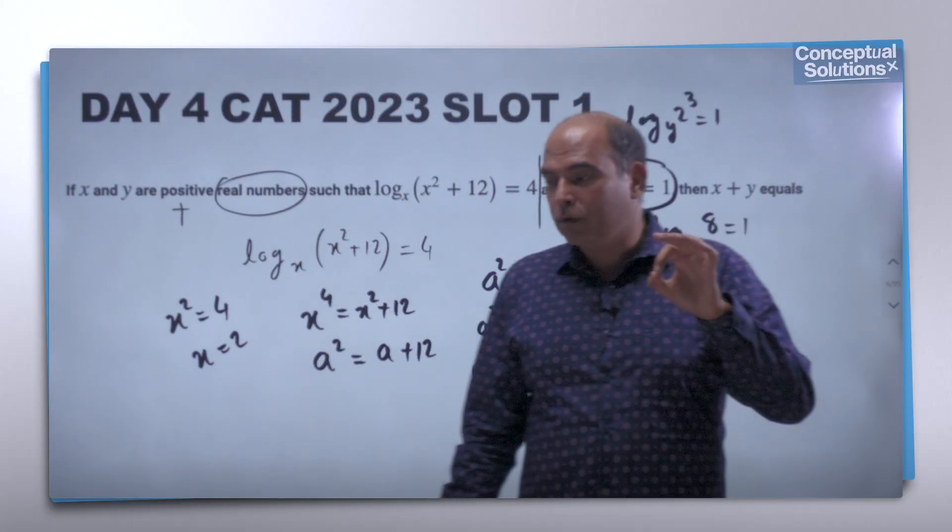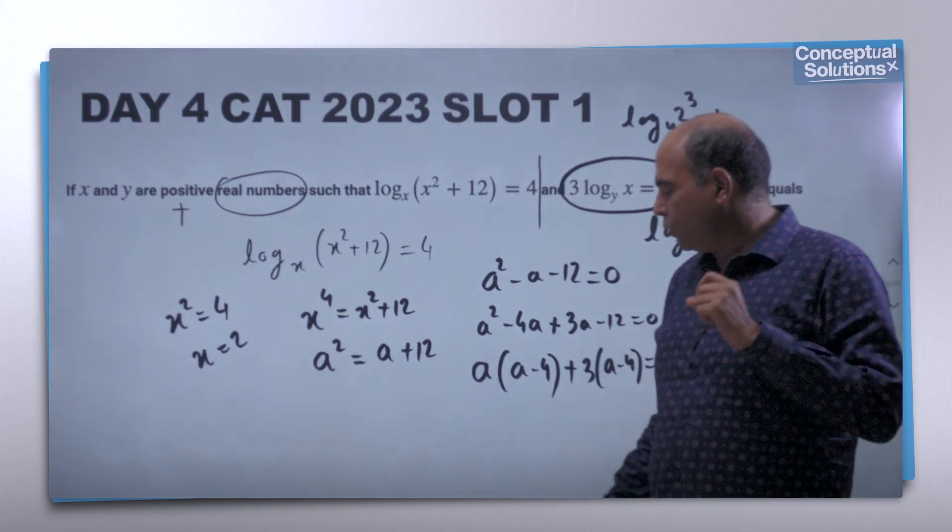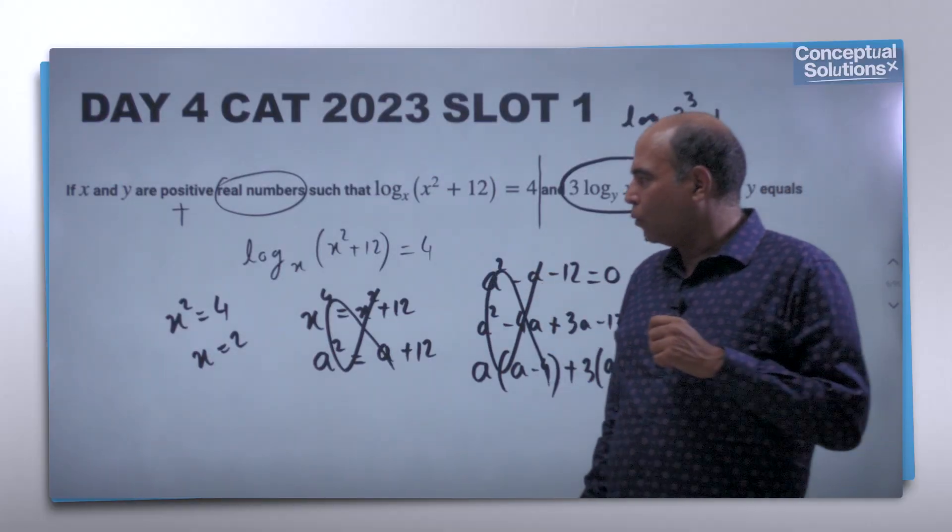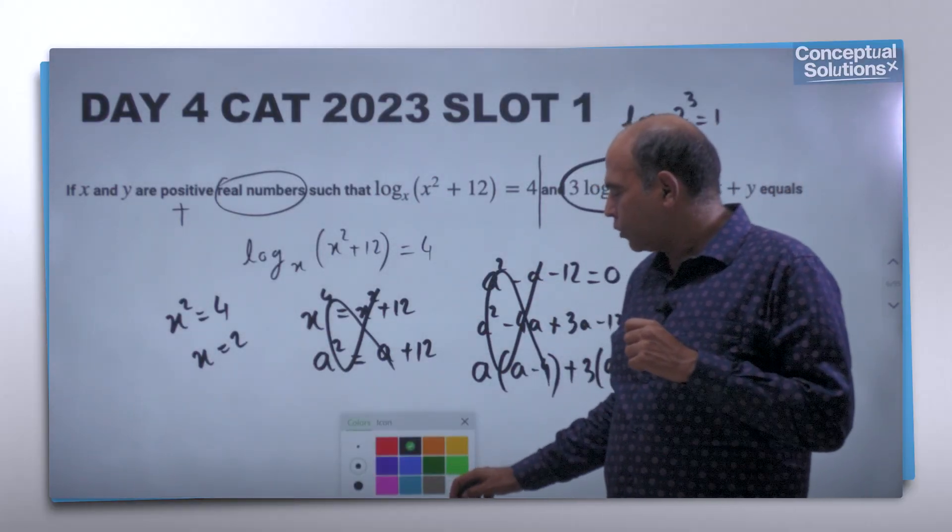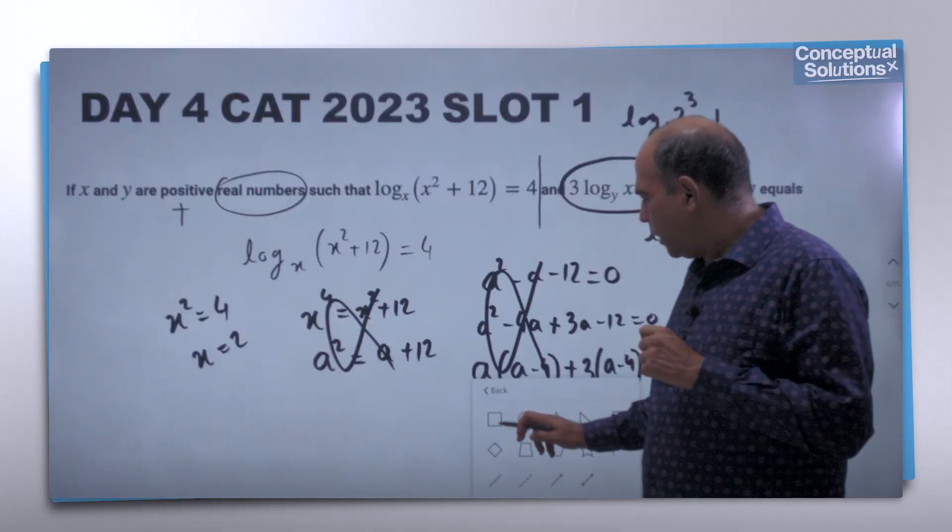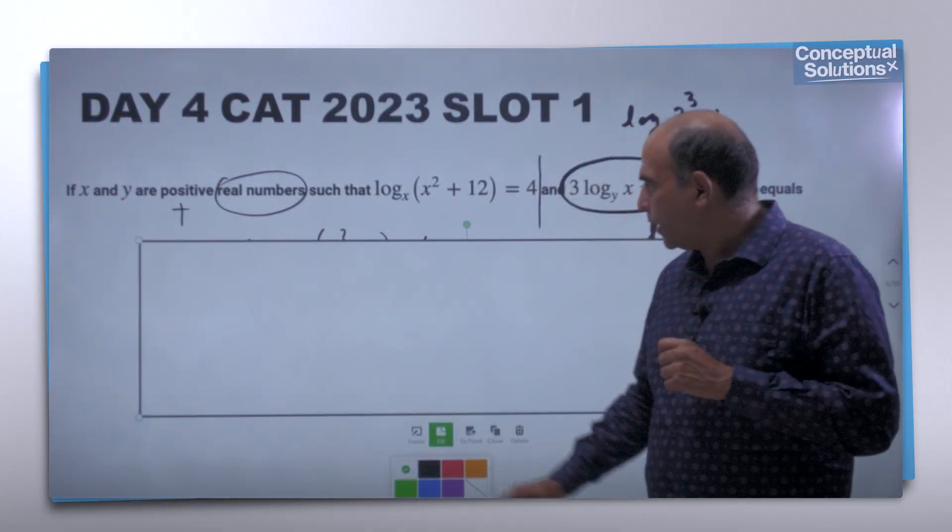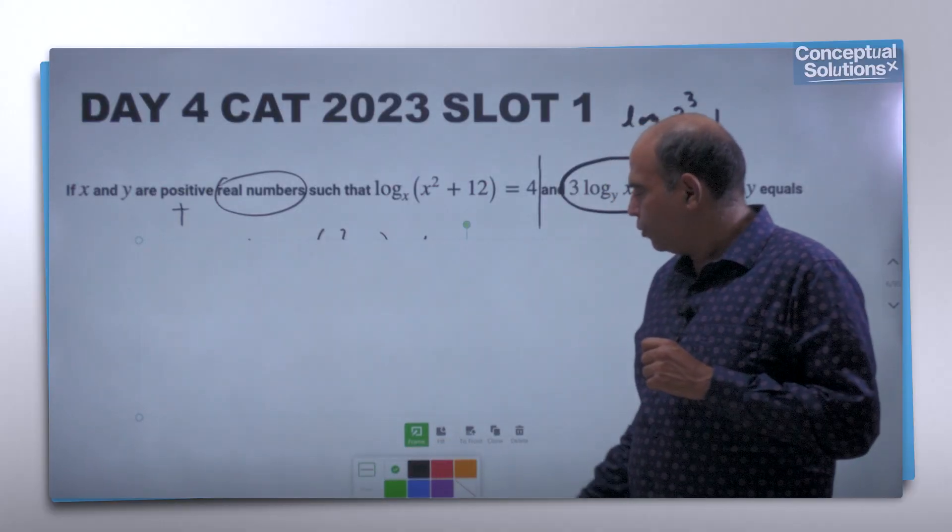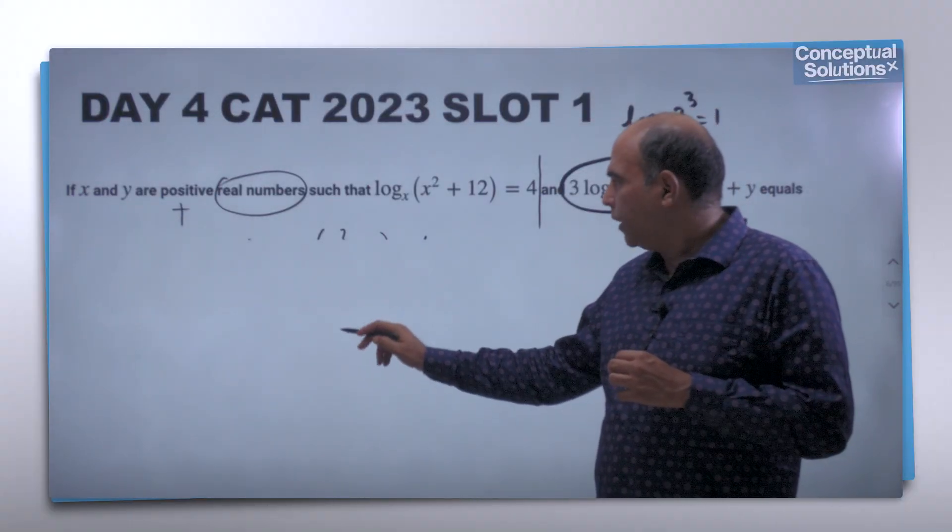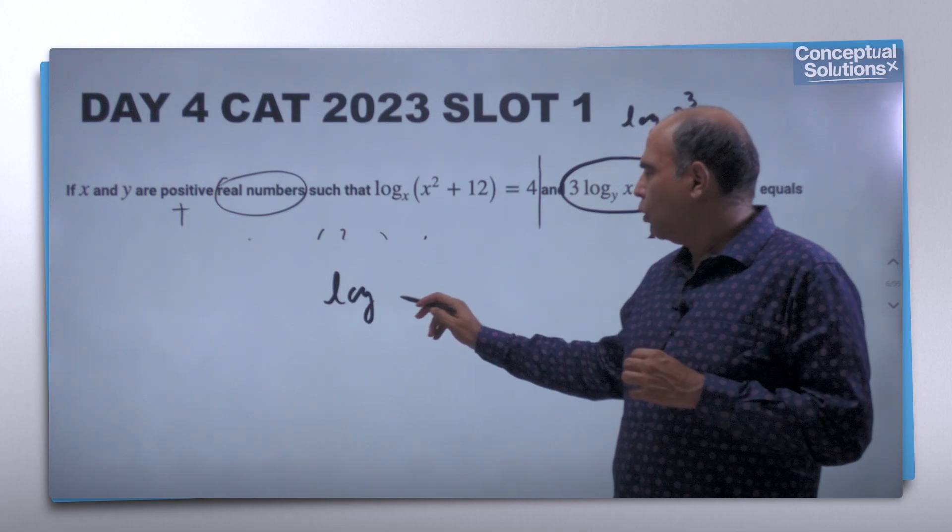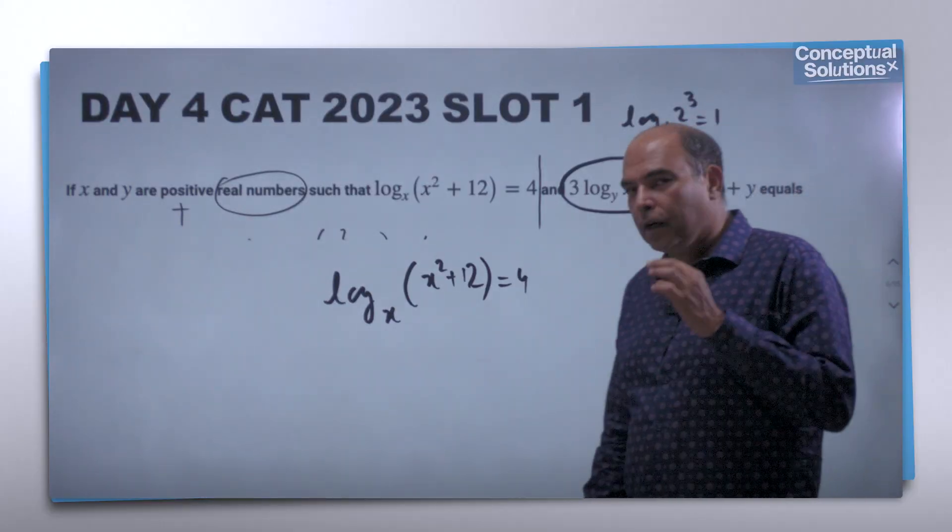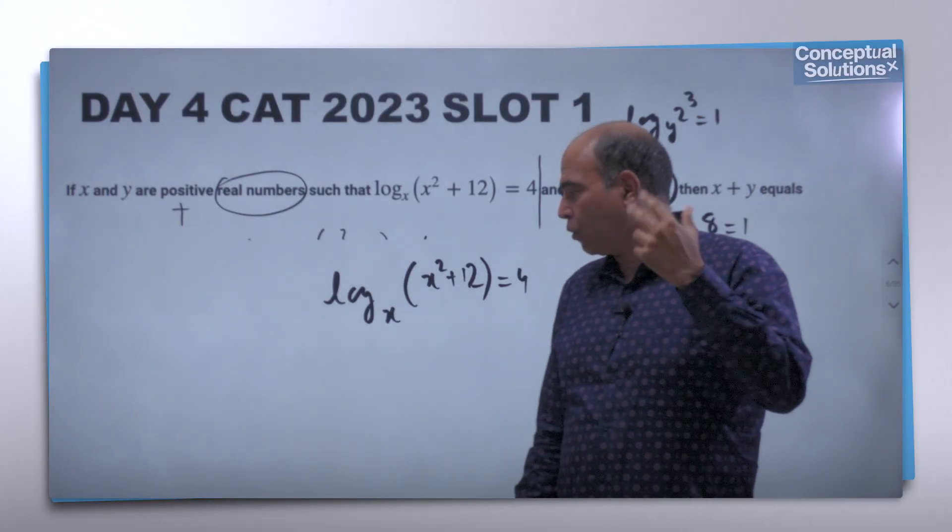Now this is one way of getting through this solution, but there is a faster way. You can avoid all the algebraic work and instead focus on one simple thing. Let me show you an alternate way of solving this. If you look at this trigger again, log_x(x² + 12) = 4.